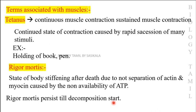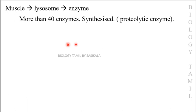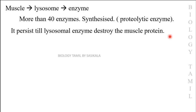Rigor mortis persists until the lysosomes destroy the muscle protein. Lysosomes contain more than 40 proteolytic enzymes. It persists for approximately 15 to 25 hours; after 25 hours, the muscles relax.